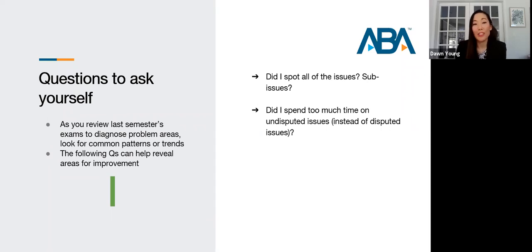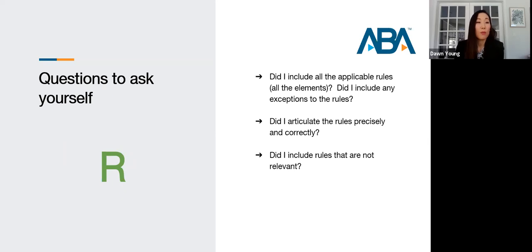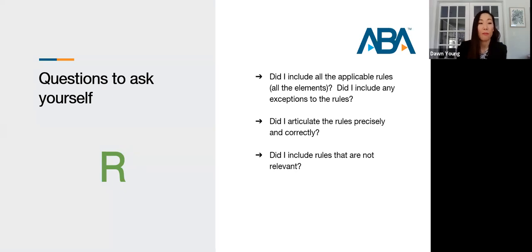Moving to the R — the rule — you can ask: Did I include all the applicable rules? Did I include all the elements? Did I include any exceptions to the rules? Did I articulate the rules precisely and correctly? Did I state the incorrect rule? Did I include rules that were not even relevant?